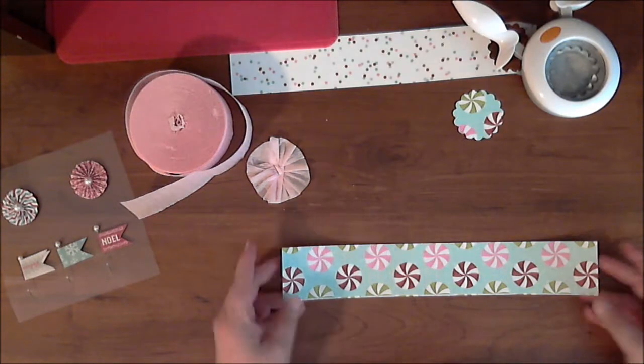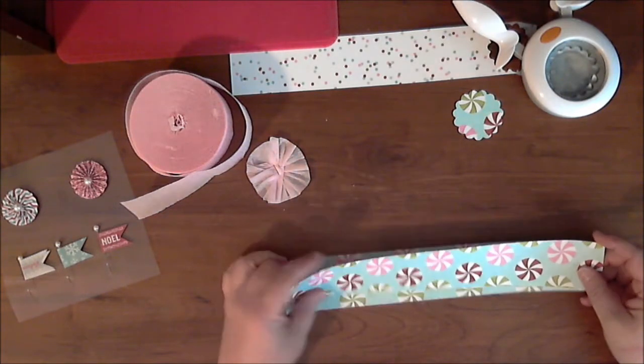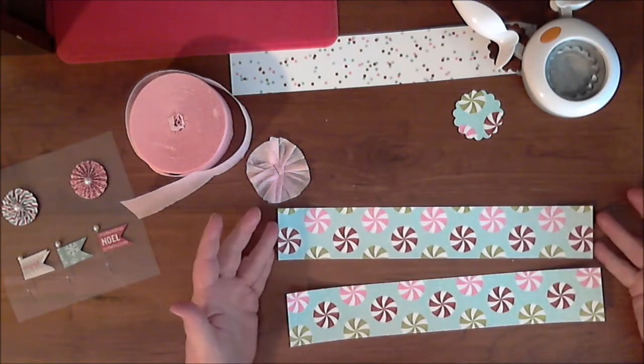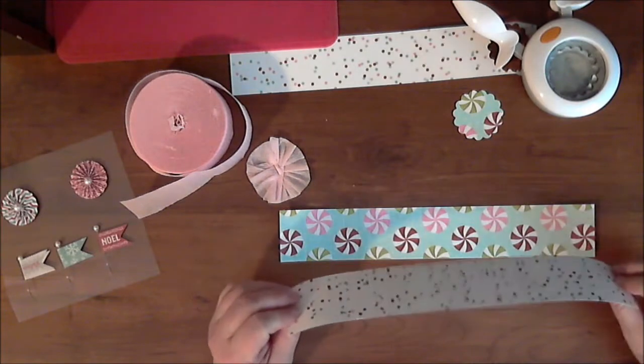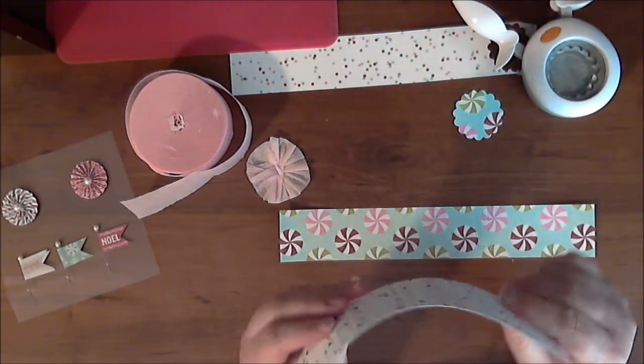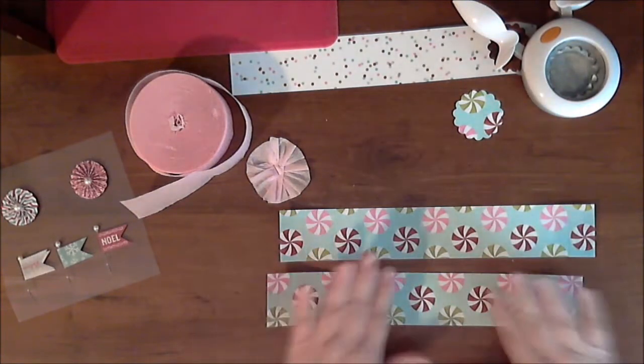Now what you'll need for this is two pieces of paper cut 12 inches long by 2 inches wide. And you'll need to take a scoring tool and score every half an inch. I don't know if you can see that or not, but I've got some score marks on there. So you need two of those.